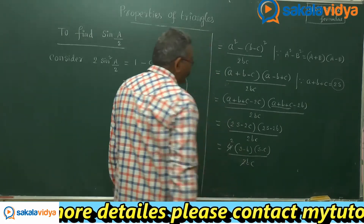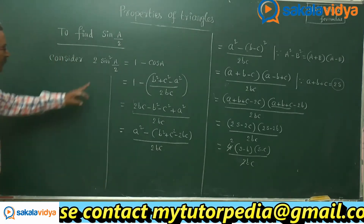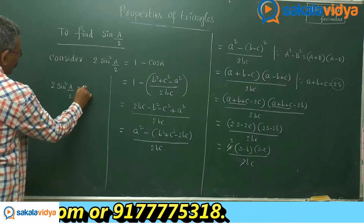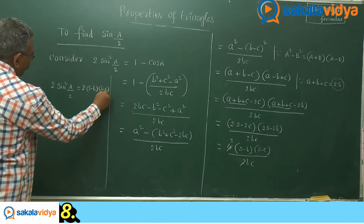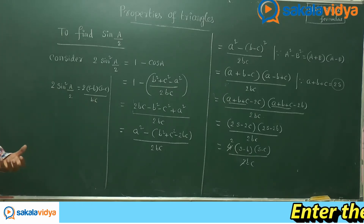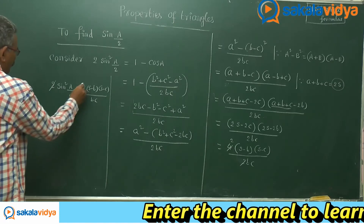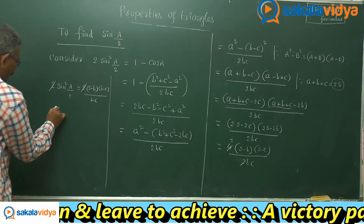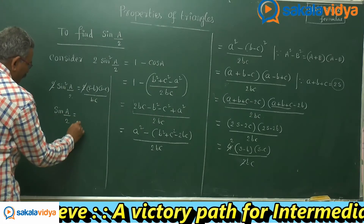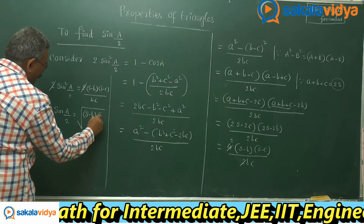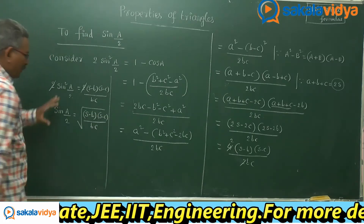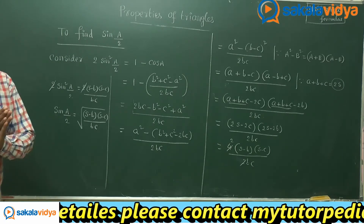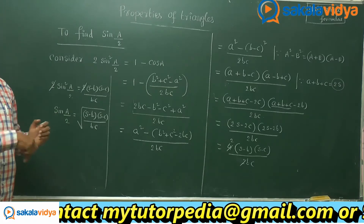Taking 2 common from each factor in the numerator gives 4(S − b)(S − c) / 2bc. So 2 sin²(A/2) = 2(S − b)(S − c) / bc. Cancelling the 2 on both sides, sin²(A/2) = (S − b)(S − c) / bc. Therefore, sin(A/2) = √[(S − b)(S − c) / bc]. This is the derived formula for sin(A/2), and it is straightforward to remember.